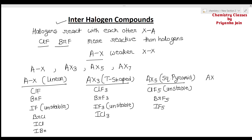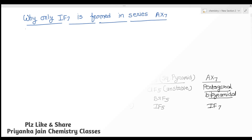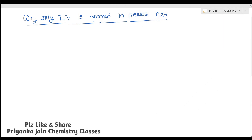The fourth category is AX7, which has a pentagonal bipyramidal shape. The only example of AX7 type is IF7. We have not seen ClF7 or BrF7 — only IF7 can exist.